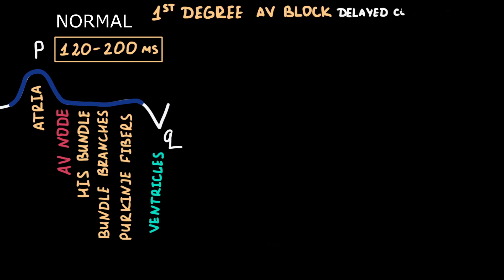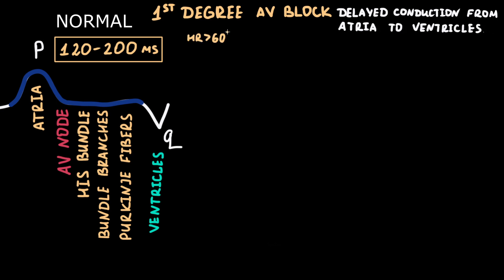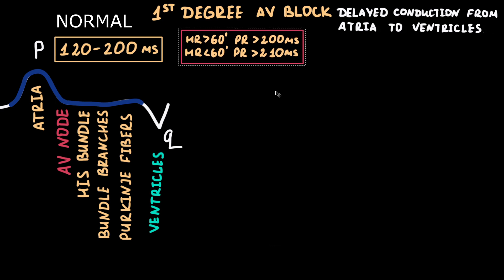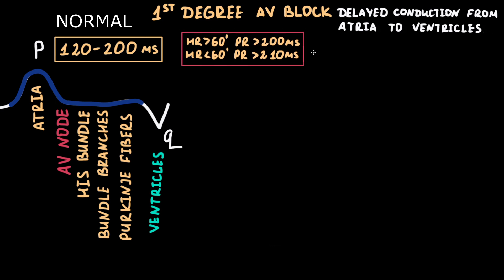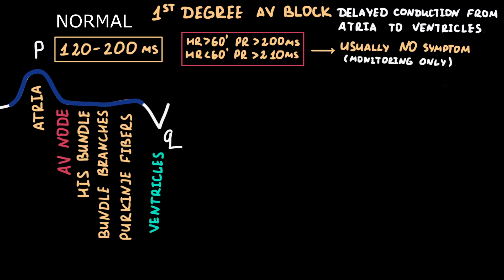First-degree AV block is delayed conduction from the atria to the ventricles without interruption of atrioventricular conduction. It is defined as a prolonged PR interval of more than 200 ms when the heart rate is above 60 beats per minute, or more than 210 ms when the heart rate is below 60 beats per minute. Usually, first-degree AV block causes no symptoms and requires only monitoring, because atrioventricular synchrony is preserved and the cardiac cycle sequence is unchanged.